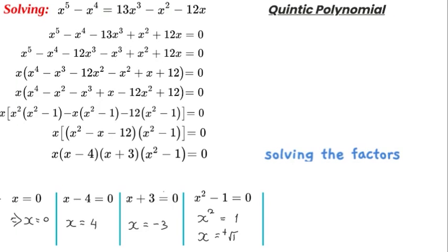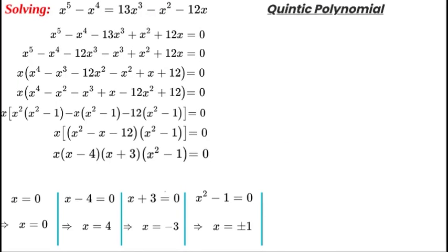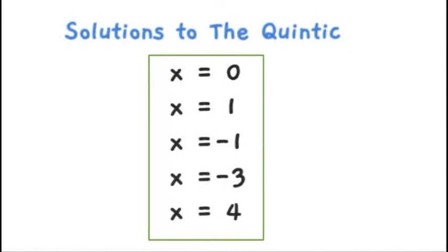We have a full set of solutions. The solutions to the quintic are x = 0, x = 1, x = -1, x = -3, and x = 4. I hope you enjoyed this video. Thanks a lot for watching. Don't forget to subscribe and see you again soon on the next video.